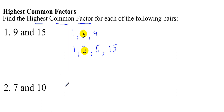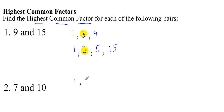Looking at the second example — and you might want to pause the video at this stage and have a go yourself. Factors of 7. Now I've purposely picked the number 7 to help us recap on the meaning of one of the words we mentioned earlier, which is prime. 7 is a prime number. And you may recall that prime numbers only have two factors: one and the number itself. So 1 goes exactly into 7, and 7 goes exactly into itself. Those are the only two factors of 7, because it's a prime number. 10 is not a prime number, so it has more than two factors.